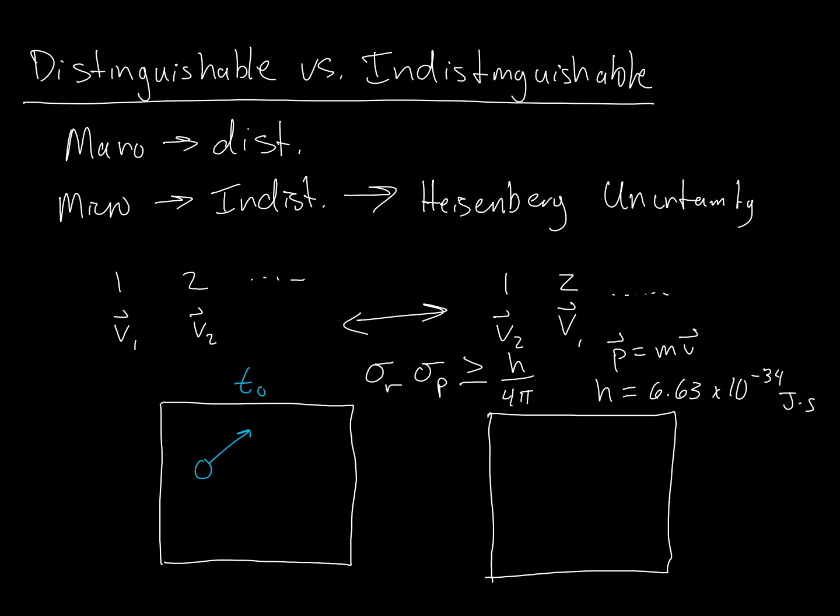If we were to investigate a system, and imagine that we could label particles here as maybe 1, 2, and 3, if we allowed some time to pass—T naught plus some delta T time that has elapsed—we'd be left with three particles in entirely different locations. But we would never have any idea of which of those particles they were originally.